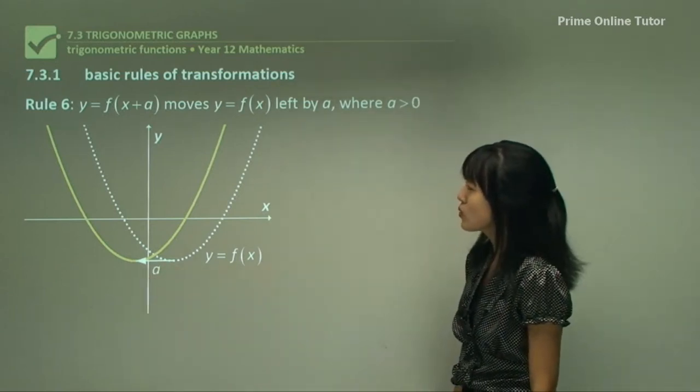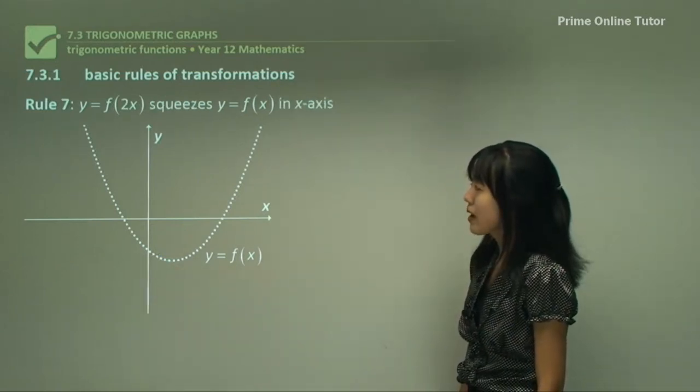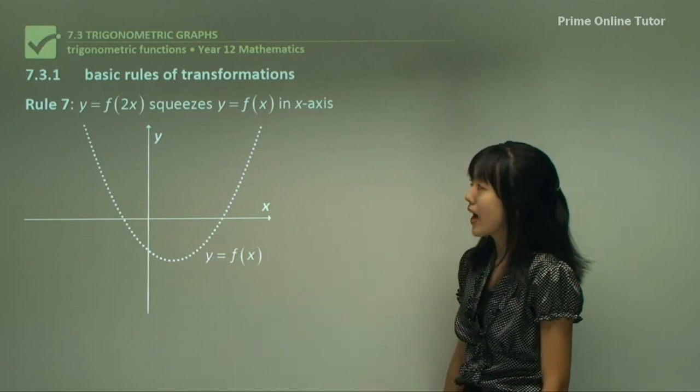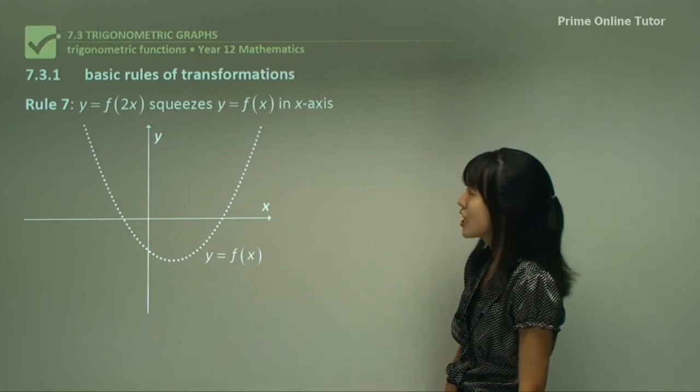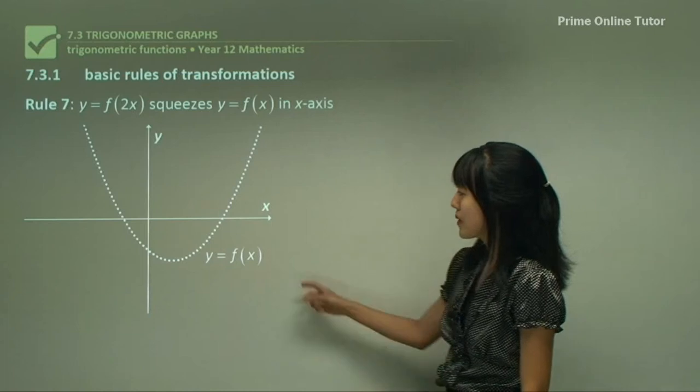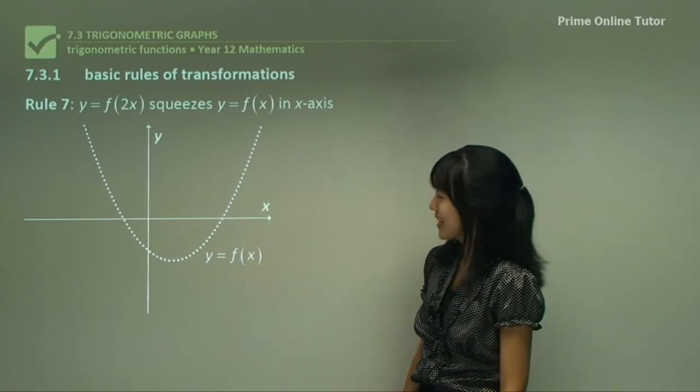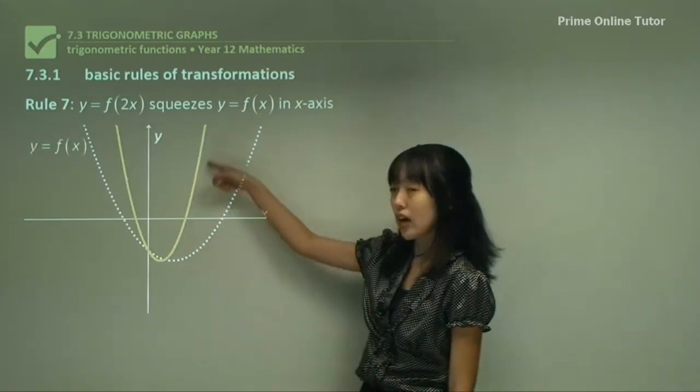Rule seven. What would happen if f of x becomes y equals f of 2x? What would happen is it would be squeezed. You'll see here. It becomes taller. Do you see?